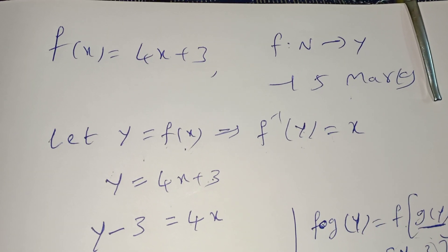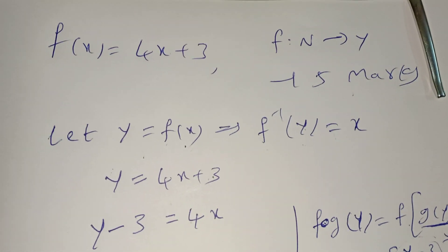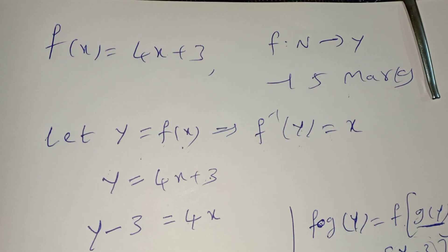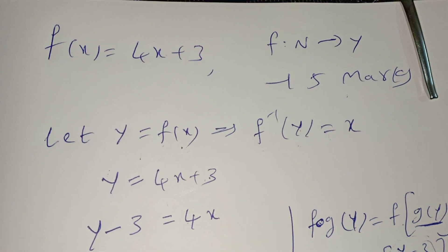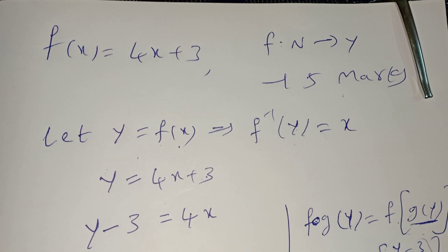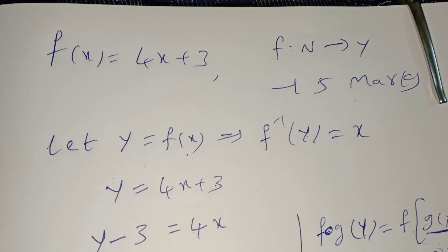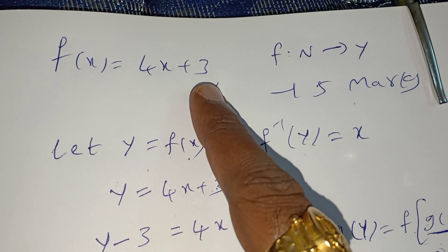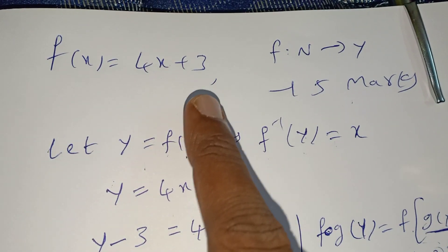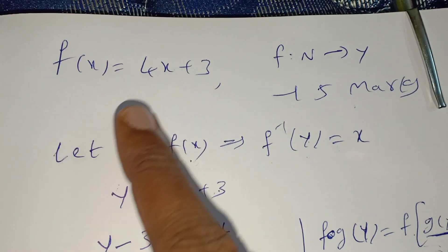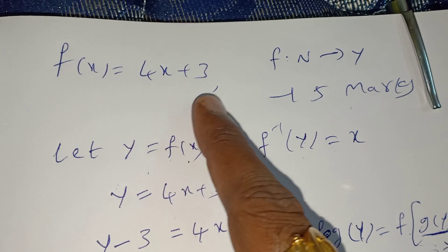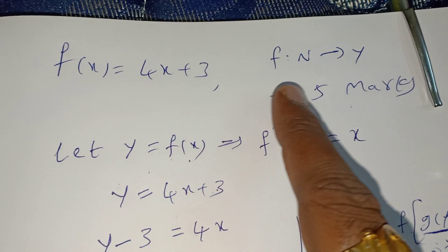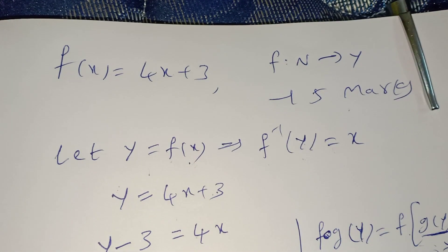Hi everyone. Five marks question of Relations and Functions — a very important question. Out of three to four questions in Relations and Functions, one question is this type. Given that f(x) = 4x + 3, f maps R to R. Verify f is invertible and find the inverse of f.